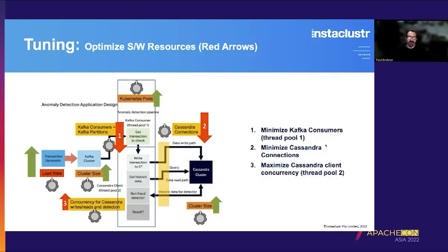What did we tune? We had to optimize software resources: first, minimize the number of Kafka consumers (the first thread pool); second, minimize the number of Cassandra connections; and third, maximize the number of Cassandra client threads — the concurrency in the Cassandra client thread pool, which was the second thread pool we set up.